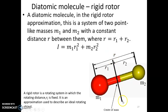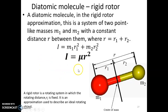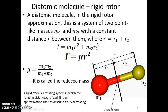The moment of inertia is I = m1·r1² + m2·r2². Using the center-of-mass condition m1·r1 = m2·r2, we can express I as a function of the total bond length r: I = μr², where μ is the reduced mass, μ = (m1·m2)/(m1+m2). The reduced mass is the effective mass of the ideal rotating system.